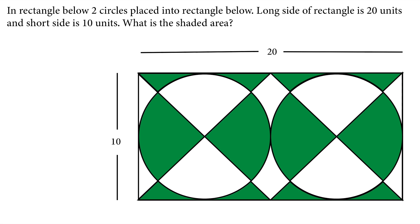Hi there. In this video we will solve this geometric question related to circle area. Let's read the question: in the rectangle below, two circles are placed. The long side of the rectangle is 20 units and the short side is 10 units. What is the shaded area?